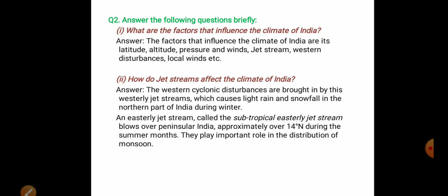Latitude relates to the position relative to the equator. Altitude also plays a role. Pressure and winds are key factors. Question number two: How do jet streams affect the climate of India?